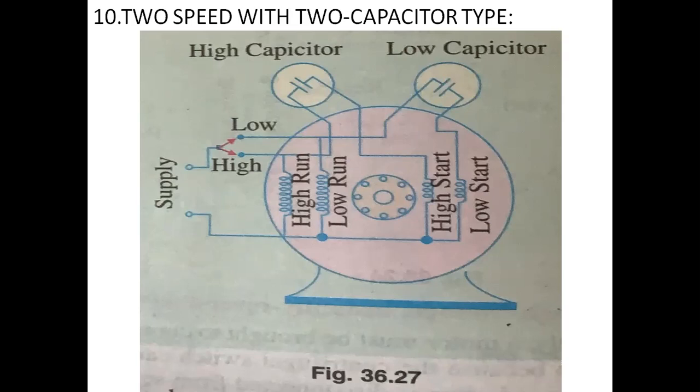These are the types of capacitor start motors. In all these ten types, capacitor start motors have the capacitor present only at the time of starting. By using a centrifugal switch, the capacitor is cut out when the induction motor runs to normal speed. Now, we will see what happens if the capacitor is kept in the circuit during running — that is called a capacitor start and run motor.